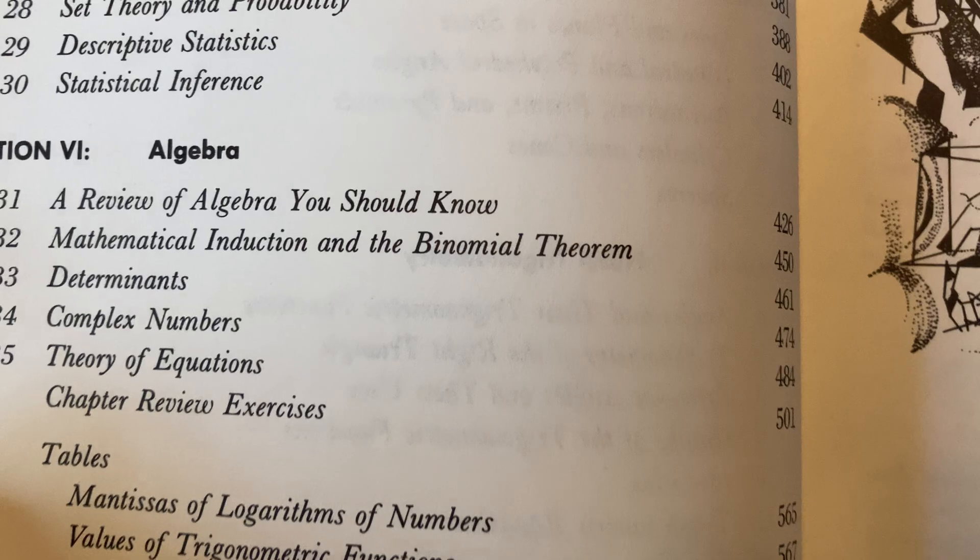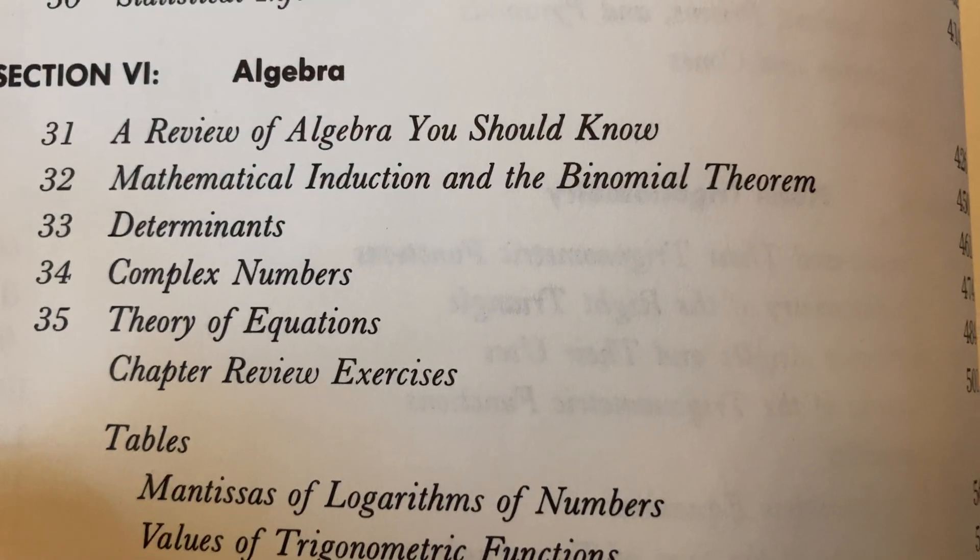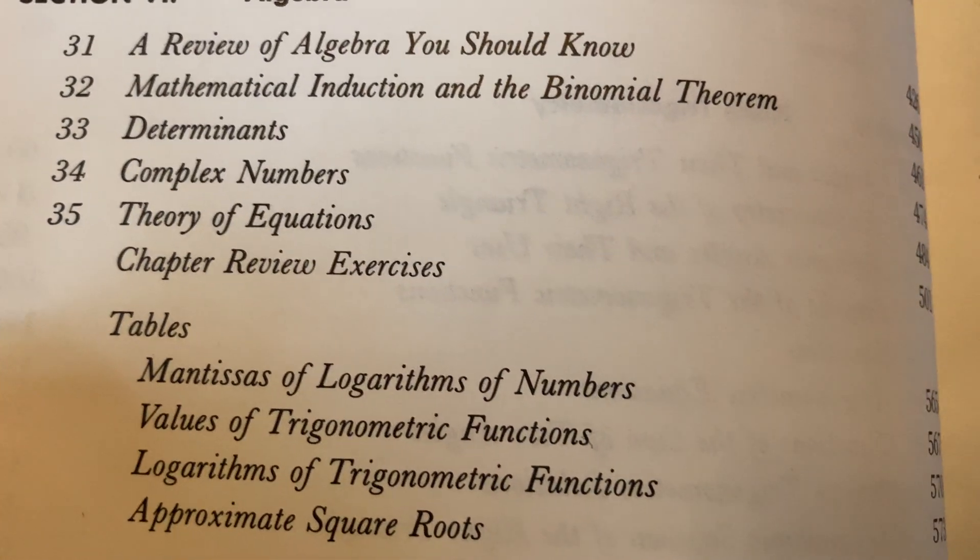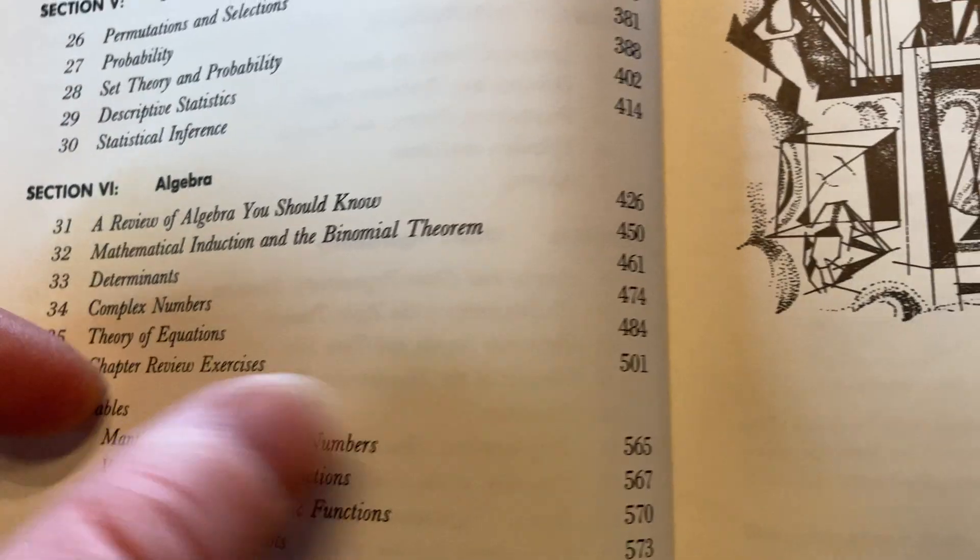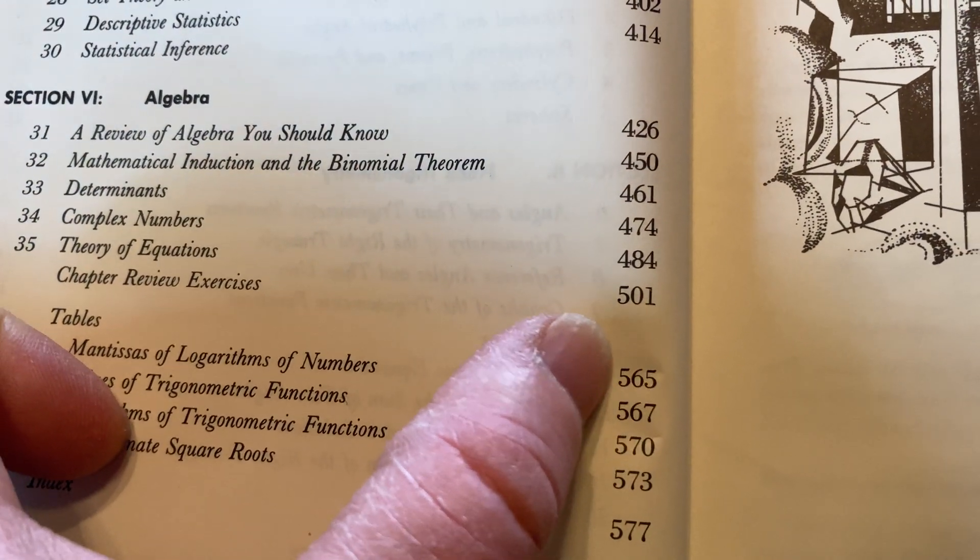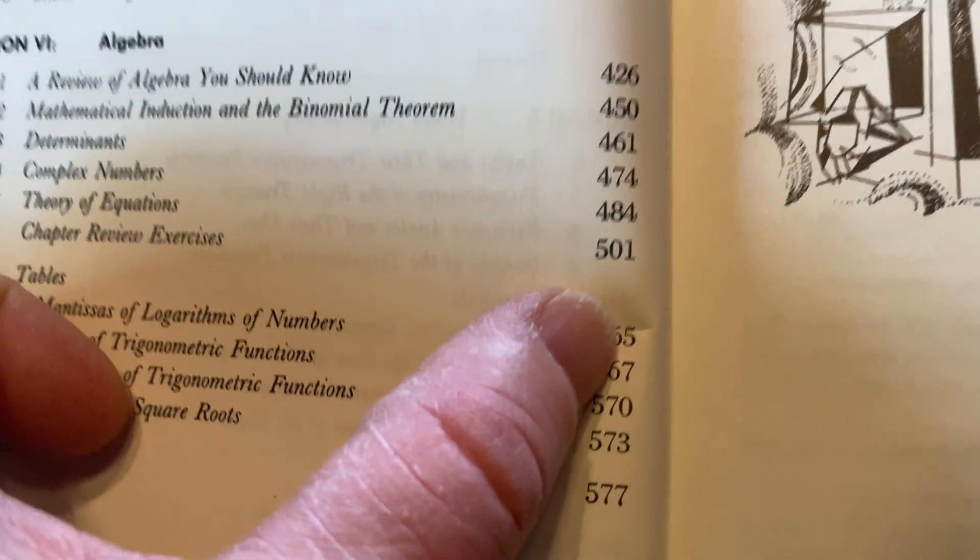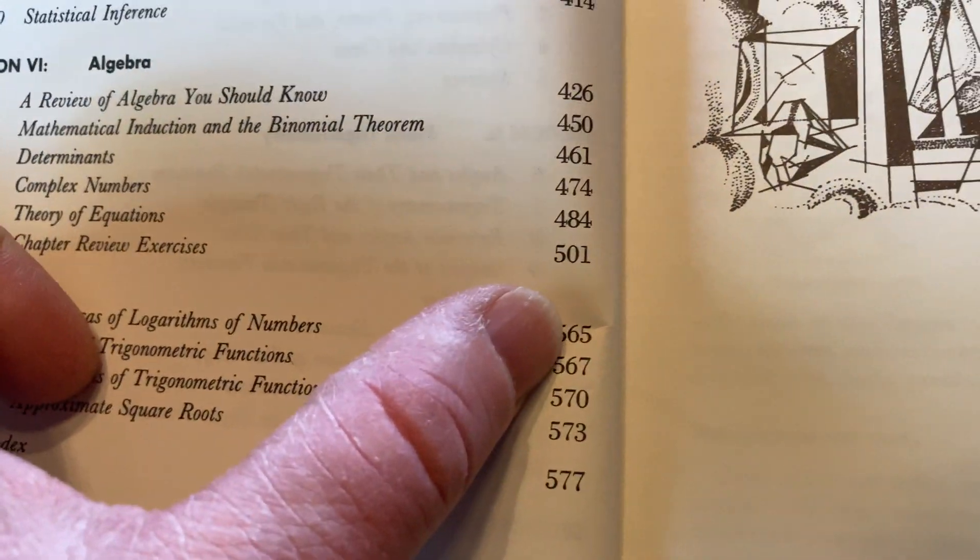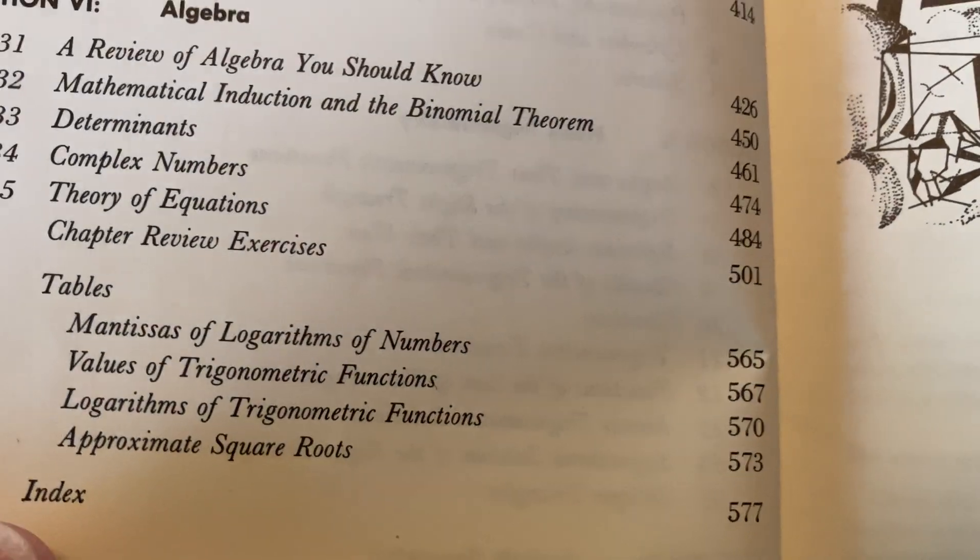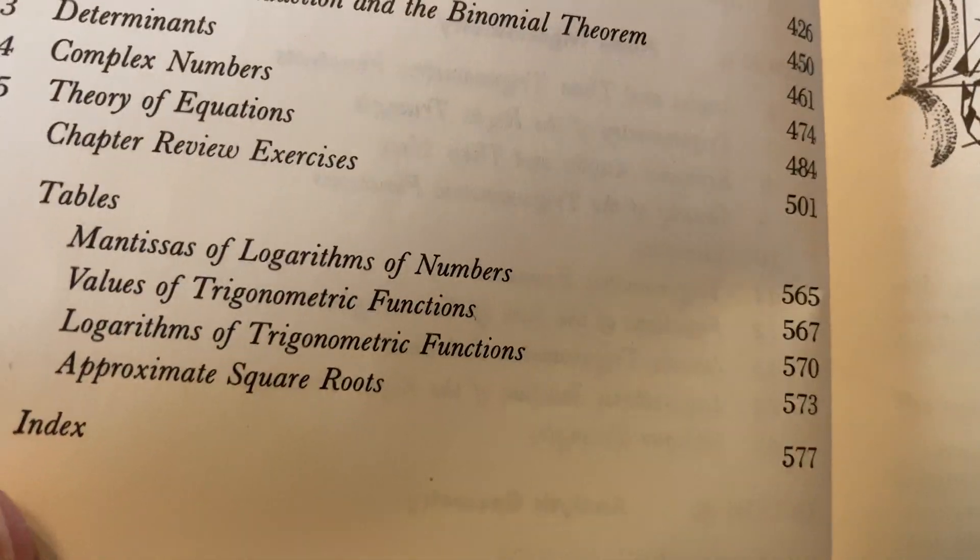A review of algebra you should know, induction in the binomial theorem, determinants, complex numbers, theory of equations, and it has these chapter review exercises, and it has a lot of these. So look at the page number, 501, 565. A big chunk of the book, I mean a considerable part, a decent percentage, is exercises. So this book has a lot of exercises.